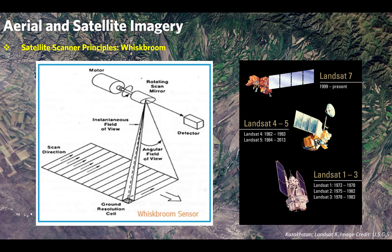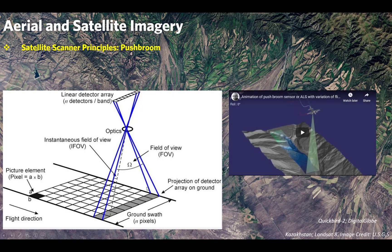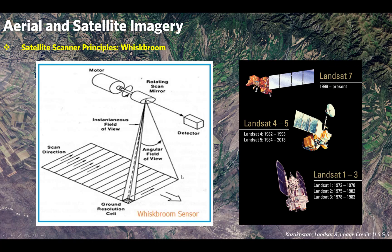If you can imagine sweeping your floor, going back and forth with your broom — that's kind of how the whisk-broom method works. The mirrors and lenses wiggle back and forth. As the satellite passes over the area of interest, the scanners wiggle back and forth across the direction of travel and gather information — the incoming radiation off the face of the Earth — on a pixel-by-pixel basis.